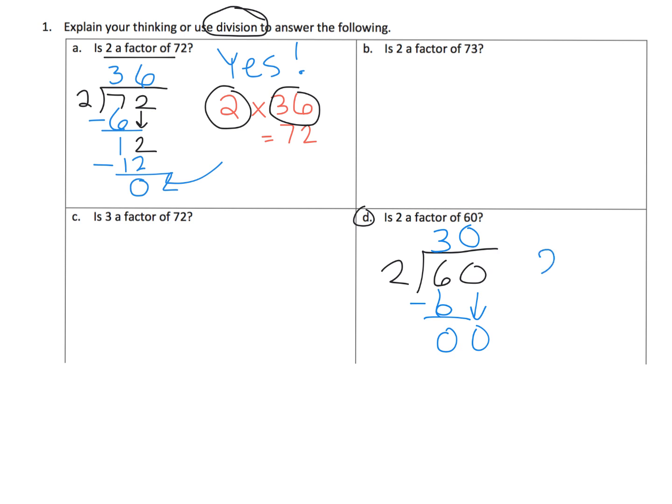So we know that 2 times 30 is equal to 60. So that means both 2 and 30 are factors of 60.